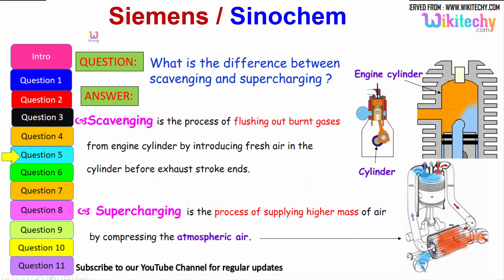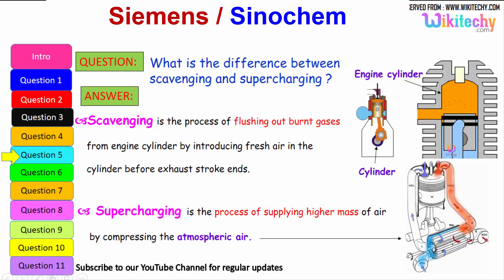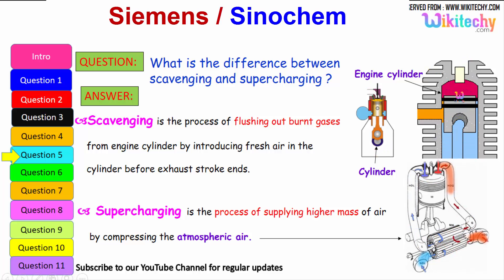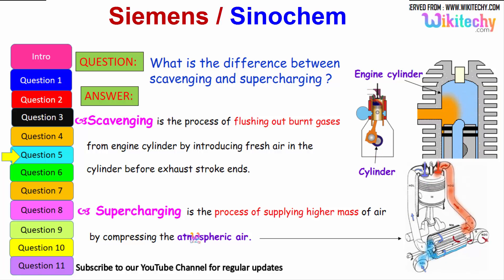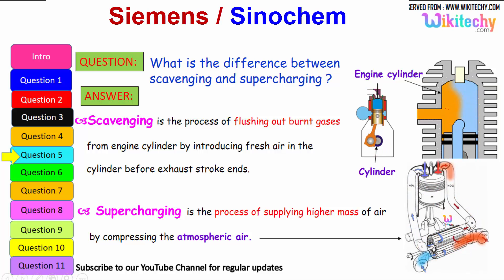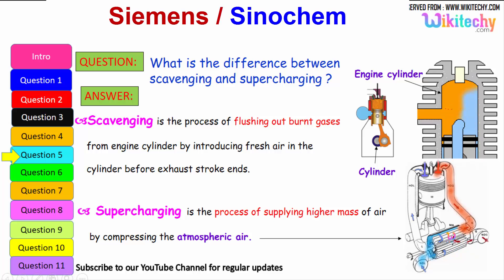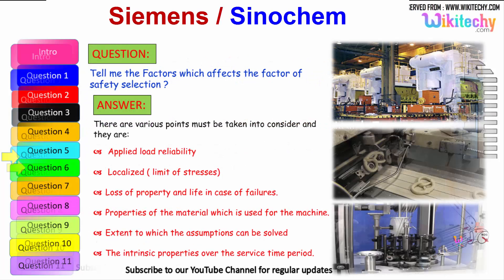What is the difference between scavenging and supercharging? Scavenging is the process of flushing out the burnt gases from the engine cylinder by introducing fresh air into the cylinder before the exhaust stroke ends. Supercharging is the process of supplying high-density masses of air by compressing it above atmospheric pressure, so that high-pressure air is injected into the cylinder.